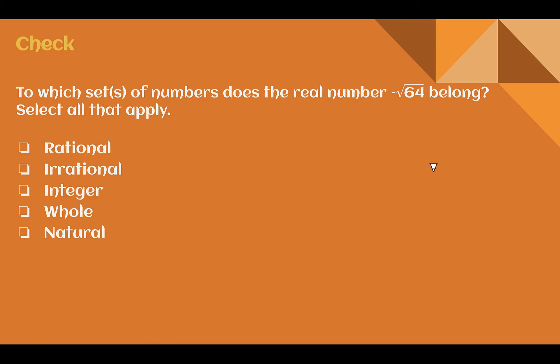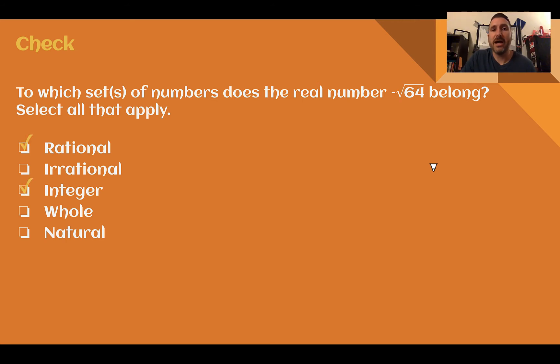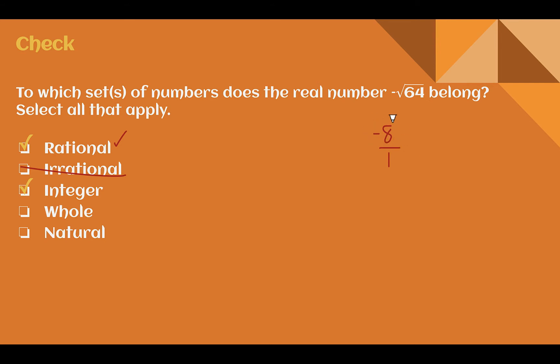Check your understanding: Which sets does the negative square root of 64 belong to? The square root of 64 is 8, and the negative sign makes it negative 8. Negative 8 can be written as negative 8 over 1, so it's rational — meaning it's not irrational. It's a negative counting number, so it's an integer. But because it's negative, it cannot be a whole number or natural number.